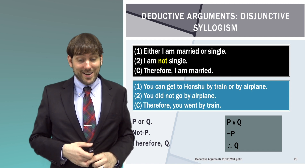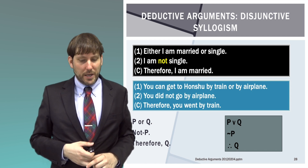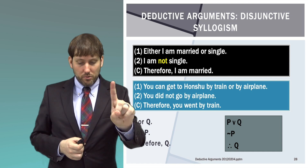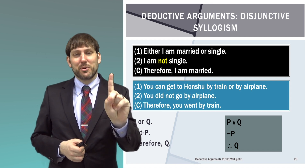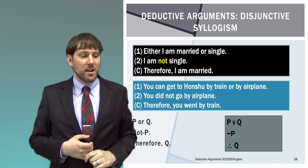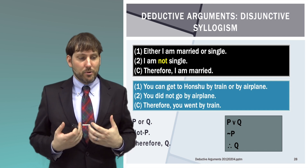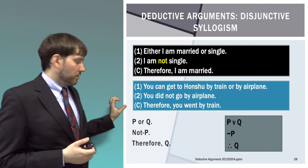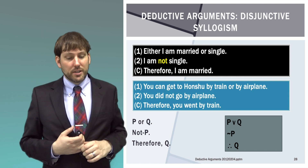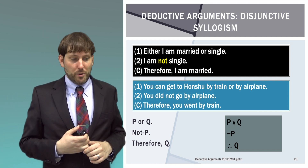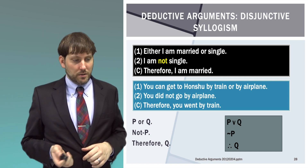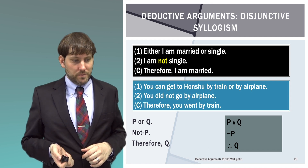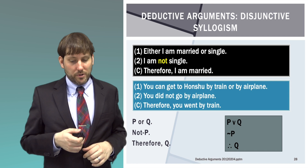Disjunctive syllogism has OR at its center and uses one OR and one NOT. 'Either I am married or I am single. I am not single. Therefore, I am married.' Another example: 'You can go to Hohenschwangau by train or by airplane. You did not go by airplane. Therefore, you went by train.' The pattern is: P or Q; not-P; therefore Q.